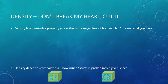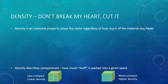Density is intensive because it describes a material's compactness, or how much stuff is packed into a given space. Let's look at these two blocks of equal volume. If the blue circles represent how much stuff is contained in each block, which block has a higher density? The block on the right is more compact — it has more stuff in the same space, so it has a higher density than the block on the left.